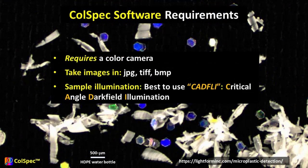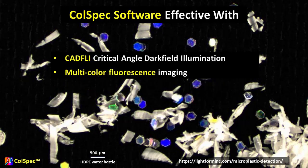Kohlspec software requires a color camera. Take images in JPEG, TIFF, or Bitmap. It is best to illuminate your samples in critical angle dark field illumination. While cadfly illumination is best, the software also works well in multicolor fluorescence imaging.